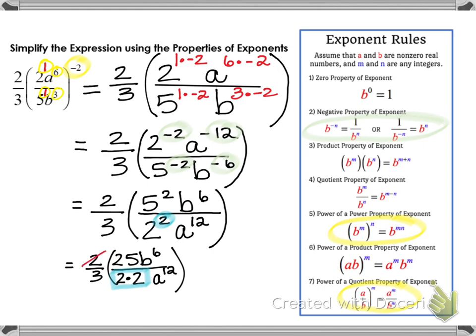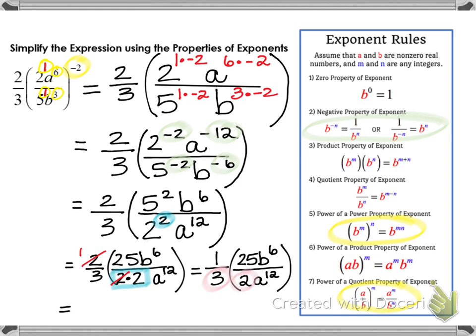Now I have a 2 in the numerator. I can divide out one common factor of 2 in the denominator, leaving a 1 behind in my numerator. So now all I have to do is multiply my numerators and denominators. On the outside I have 1 over 3, and on the inside of the parentheses I have 25b to the sixth over 2a to the twelfth. Multiplying numerators gives 1 times 25, and in the denominator 3 times 2. So the final answer is 25b to the sixth over 6a to the twelfth.